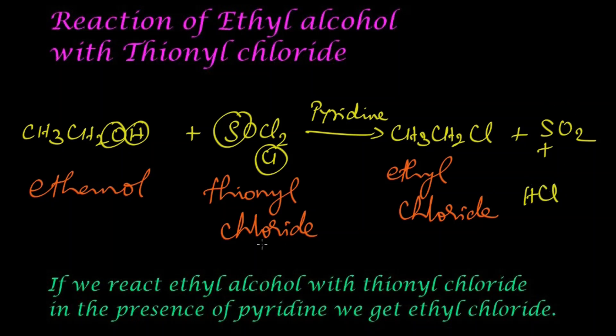To summarize: if we react ethyl alcohol with thionyl chloride in presence of pyridine, we get ethyl chloride. Thank you.